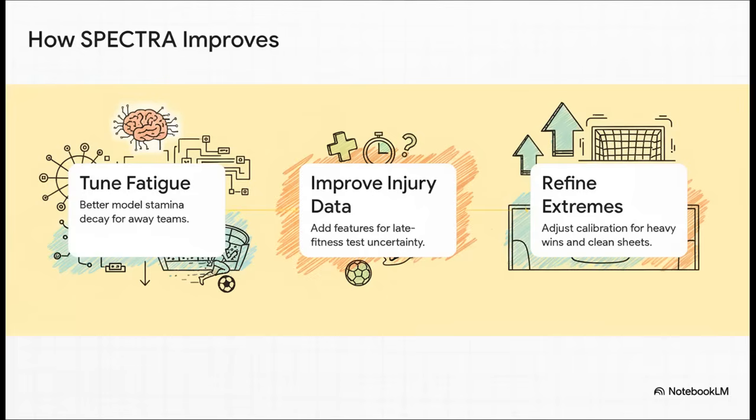And you know what the best part is? The system learns from all this. From just these two matches, the model has already figured out how to get better. It can now tweak how it measures fatigue for away teams, like we saw with Leeds. It can add new ways to account for that injury noise from late fitness tests. And it can fine-tune its predictions for those crazy outlier results, like a 4-0 blowout. It just keeps getting smarter.